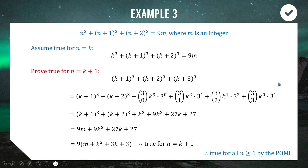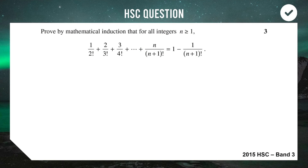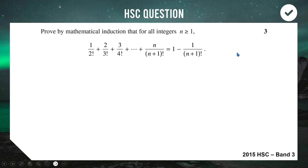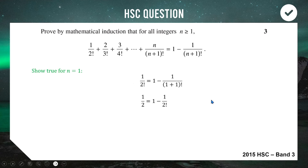Moving on to example four — an HSC question from 2015, rated Band 3, involving factorials and fractions. Starting with n = 1: left-hand side is 1/(2!), right-hand side is 1 − 1/(2!) = 1 − 1/2 = 1/2. Left-hand side is also 1/2, so they're equal. The initial case works — that's the easiest mark you'll get in the entire HSC exam.